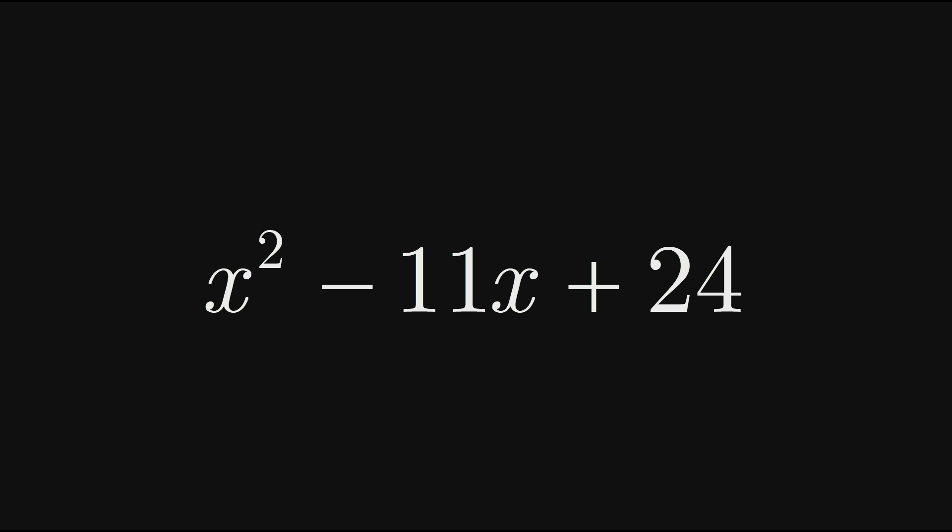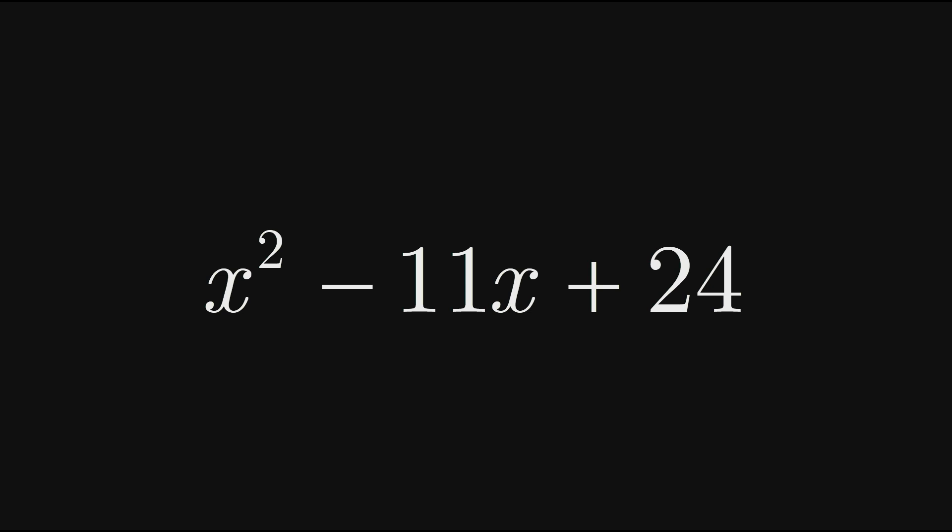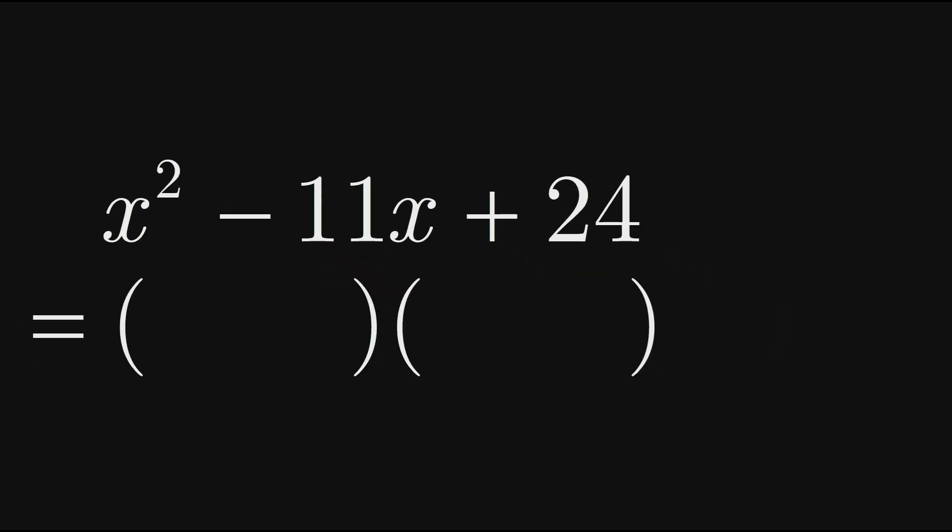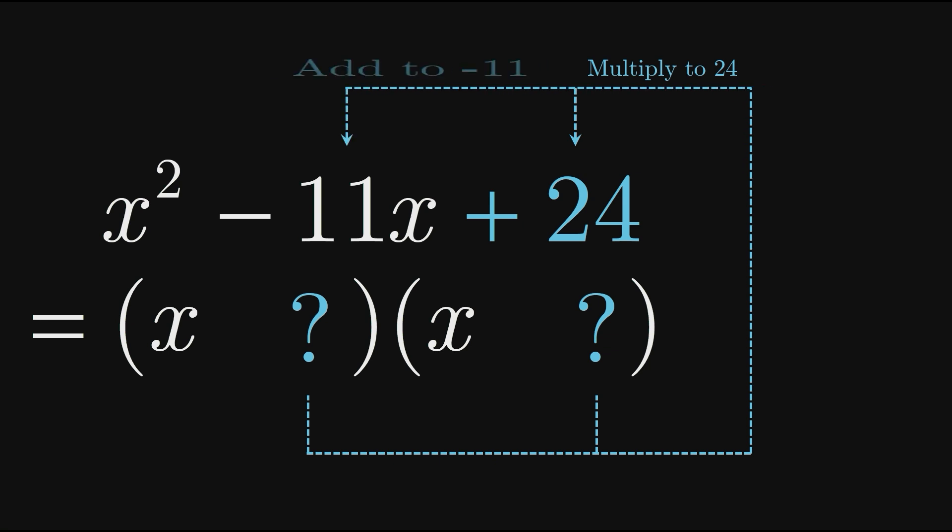Now let's factor x squared minus 11x plus 24. Again, our result will have an x term in each set of brackets. This time, the constant terms of our factors must multiply to 24 and add to negative 11.